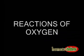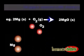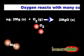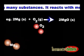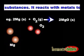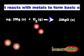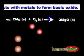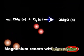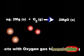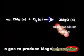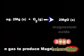Reactions of oxygen: oxygen reacts with many substances. It reacts with metals to form oxides. An example is the reaction between magnesium and oxygen gas, leading to the production of magnesium oxide.